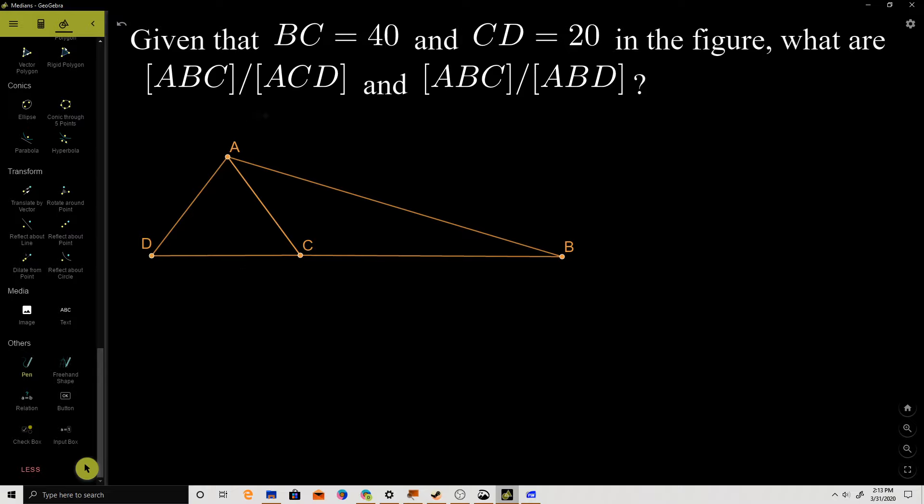Given that BC equals 40, this length here, and CD equals 20, what are the ratios of the area of ABC over the area of ACD and the area of ABC over the area of ABD?